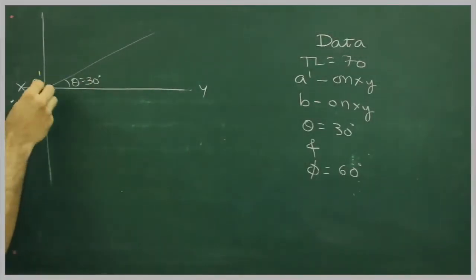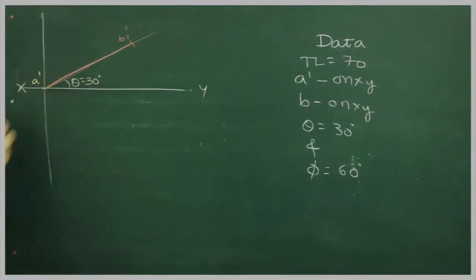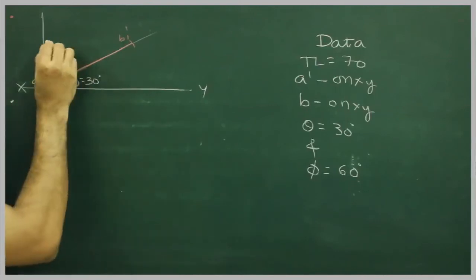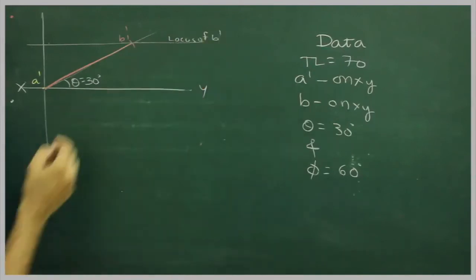And they have given true length also, so I can mark true length. That is v1 dash. We can draw the locus of v dash.